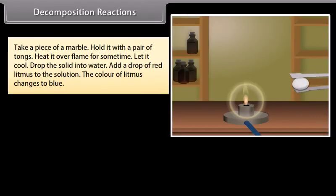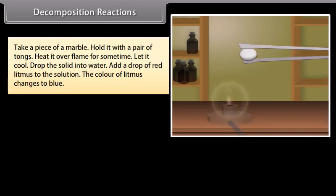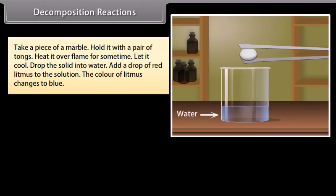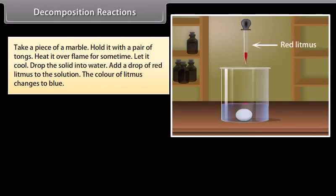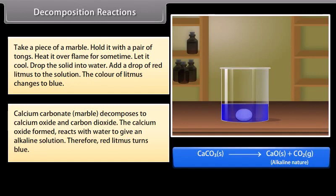Take a piece of marble. Hold it with a pair of tongs. Heat it over flame for some time. Now let it cool. Drop the solid into water. Add a drop of red litmus to the solution. The color of litmus changes to blue. Calcium carbonate, marble, decomposes to calcium oxide and carbon dioxide. The calcium oxide formed reacts with water to give an alkaline solution. Therefore, red litmus turns blue.